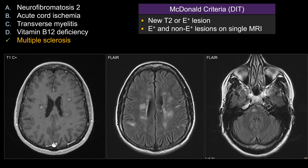For dissemination in time, there are two scenarios that can qualify. One is that if you have two sets of images and on the subsequent image you see a new T2 lesion, or a previous lesion that shows new enhancement — that qualifies as dissemination in time. Or, you don't even need two sets of images. You can have just a single set of images, like in our case, where some lesions enhance and others do not. Within the same images, if you have a lesion that behaves differently in terms of enhancement versus no enhancement, that can also qualify as dissemination in time. So in our patient, we have the diagnosis of MS.